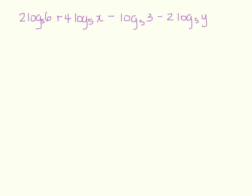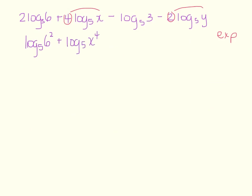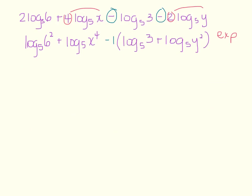Now try condensing on your own. Pause the video. When condensing, we go the opposite direction from expanding — the first step is to bring the coefficients in as exponents. So these coefficients come in. That gives log base 5 of 6 squared plus log base 5 of x to the 4th. Don't forget, if there's a negative in front of terms, factor that negative out, giving: negative times the quantity log base 5 of 3 plus log base 5 of y squared.